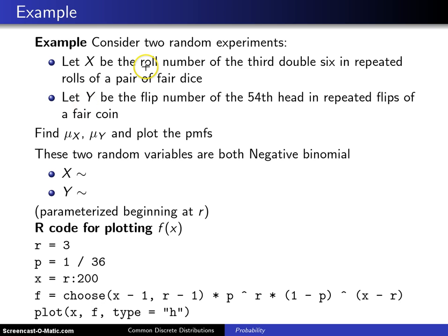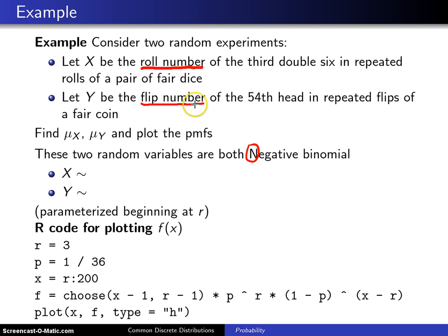For the first experiment, we are looking at the roll number, so this will be the negative binomial with a capital N. Likewise for the second one, because we are looking at the flip number of the fifty-fourth head — not the number of tails before the fifty-fourth head, but rather the trial number of the fifty-fourth head — we will again have a negative binomial distribution for Y with a capital N, because in both cases we are looking at the trial number of the rth success.